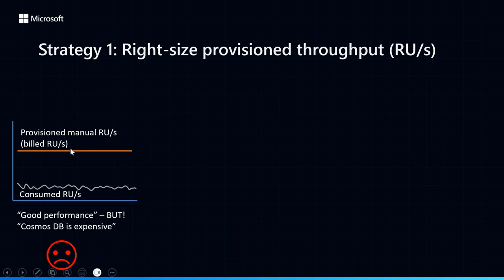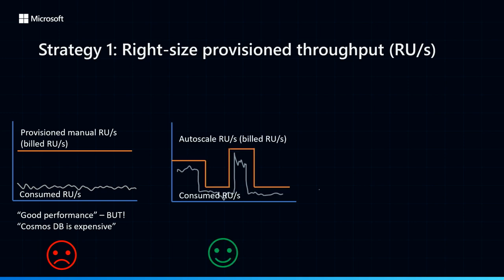If you've provisioned a lot of RUs but your consumption is lower, you might perceive that you have good performance because you're never running against the limit of this provisioned throughput. But in reality, you're over-provisioning. In contrast, the two types of workload profiles where we see the best opportunities to optimize for cost and performance are: if you have a workload that's really great for autoscale — this is actually the majority of workloads in Cosmos DB that have variable workloads. With autoscale, Cosmos DB automatically scales the RUs based on what your workload requires, so there's no more worrying about having to scale down when it's not in use. This basically gets rid of the over-provisioning gap.